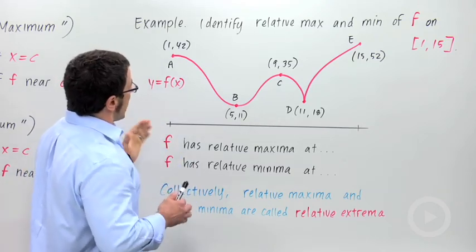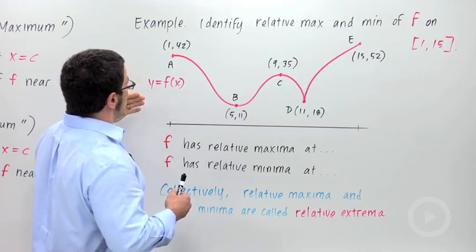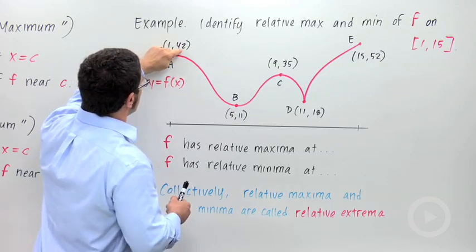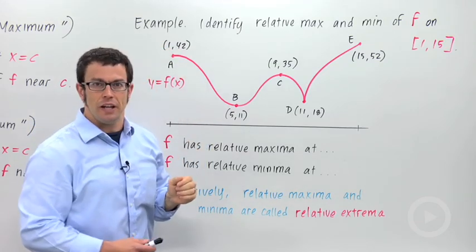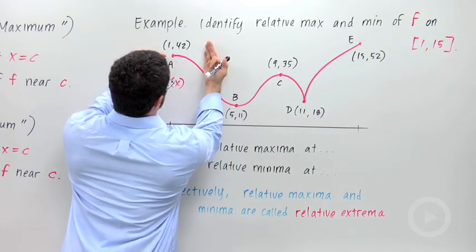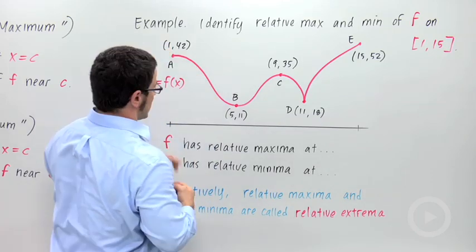Well, there's a bunch of them. Now, remember that a relative maximum is the value f of c, which is larger than any value nearby. So here, this value 42 is a relative maximum for the function f. If you look in this little neighborhood here, this is the highest point. That makes it a relative maximum. So there's a relative maximum at x equals 1.